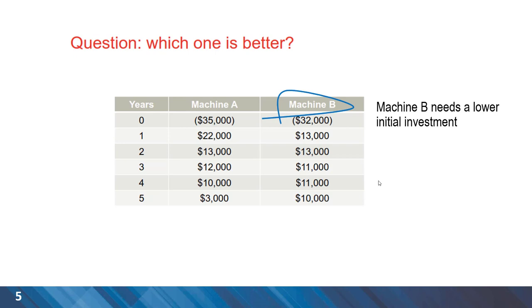Here is an example: we want to purchase a machine, for example an excavator, for our earthmoving project. There are two options available, Machine A and B. The initial investment is given, and we also have the benefits or profits for the first to fifth year of the project.